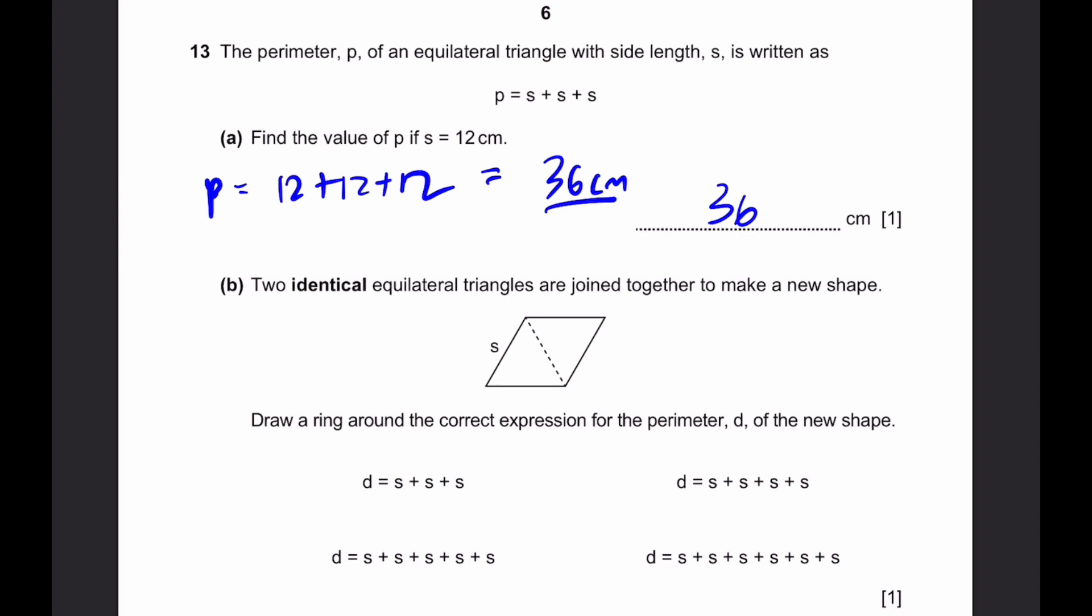Now, part b. Two identical equilateral triangles are joined together to make a new shape. Draw a ring around the correct expression for the parameter d of the new shape. We can see that if one side is s, all sides are equivalent to this one side, there are four of these sides on the outside of this shape. Therefore, d is equal to 4 times s, or d equals s plus s plus s plus s.